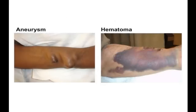Aneurysms are frequently seen on the fistula arm. They develop because of trauma from cannulating the same site or due to significant proximal stenosis in the outflow tract. It is important to note the size of the aneurysm, and the skin over the aneurysm needs to be inspected for thinning or depigmentation. Paper-thin, shiny skin over an aneurysm is a warning sign for potential rupture. The rupture of an aneurysm can lead to disastrous outcomes including loss of limb or death.